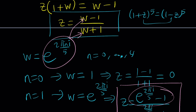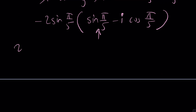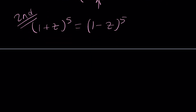That was the first method. Now let's look at an alternative approach: treating this like a polynomial using the binomial theorem. We have 1 plus z to the 5th power equals 1 minus z to the 5th power. Let's expand it. Pascal's triangle — the 5th row gives 1, 5, 10, 10, 5, 1.